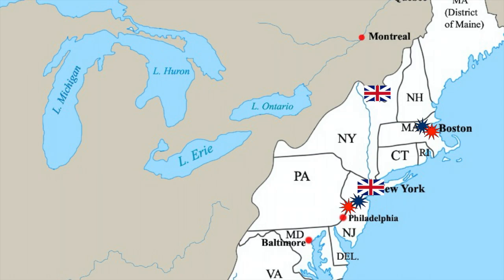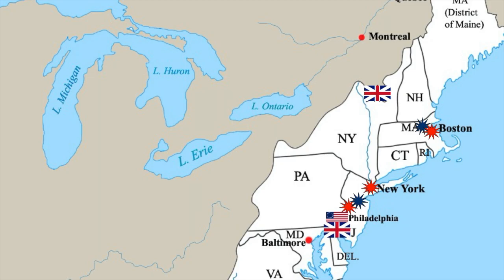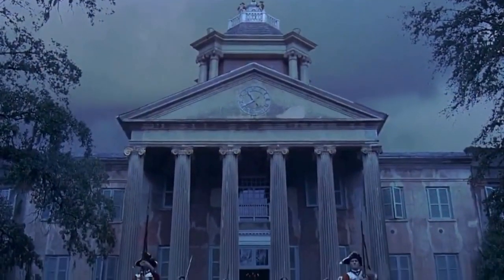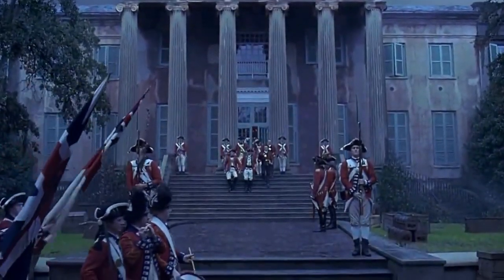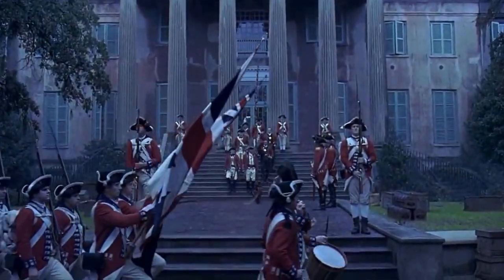Believing Burgoyne was now strong enough to operate on his own, Howe decided to seek out Washington's army independently. At first, Howe's decision seemed inspired, as on September 11th, after landing his forces at Chesapeake Bay, his forces mauled Washington's army at the Battle of Brandywine Creek. More success quickly followed when on September 25th, the British marched into the American capital of Philadelphia.